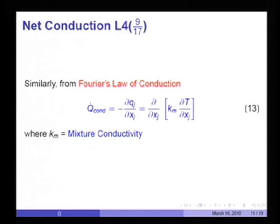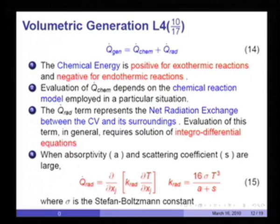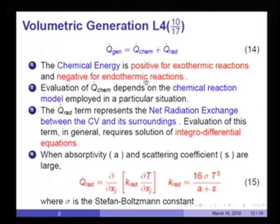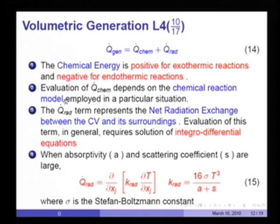Net conduction, by Fourier's law, is −dq_j/dx_j where q_j = k_m · dT/dx_j and k_m is the mixture conductivity. Volumetric generation in a moving fluid typically comprises generation due to chemical energy, since some reactions are exothermic and some are endothermic. Q-dot-chem is positive for exothermic reactions and negative for endothermic reactions. To evaluate Q-dot-chem in a moving fluid, one needs to postulate a chemical reaction model; there are a variety of mechanisms of different levels of complexity, which we shall examine when studying mass transfer.